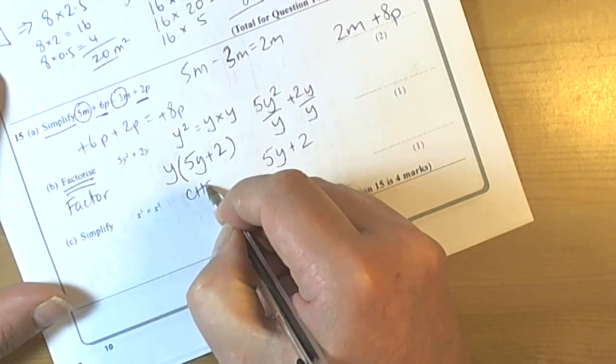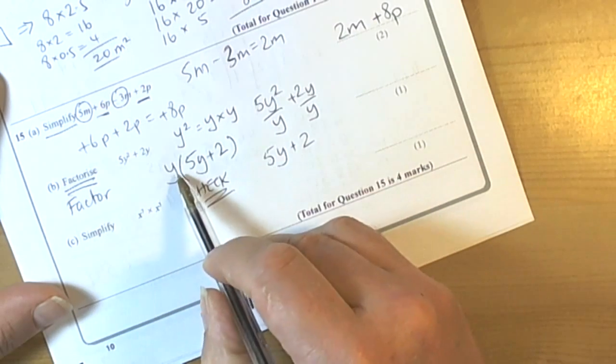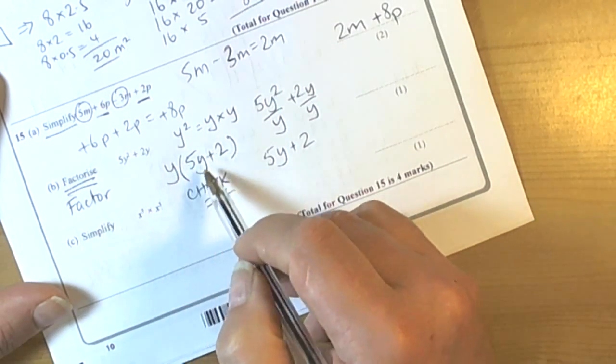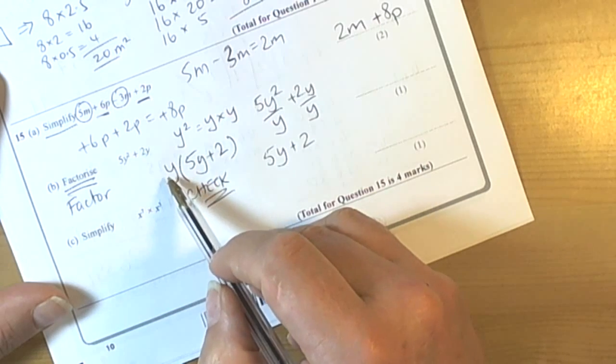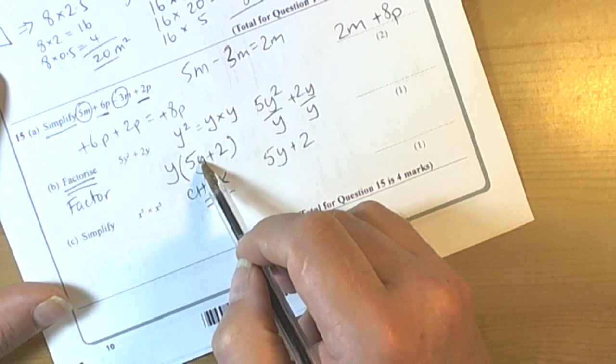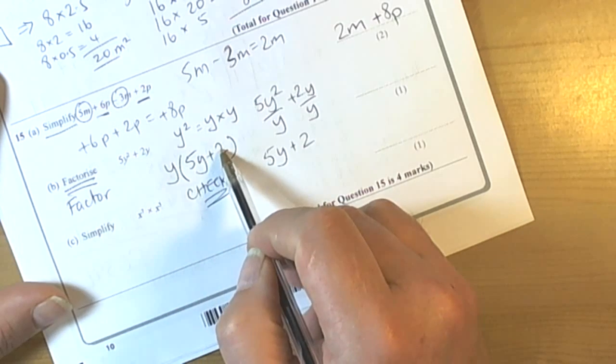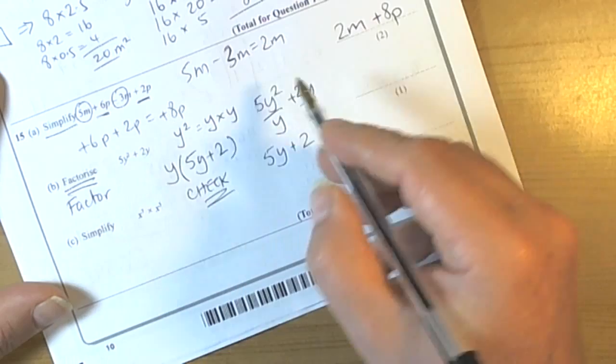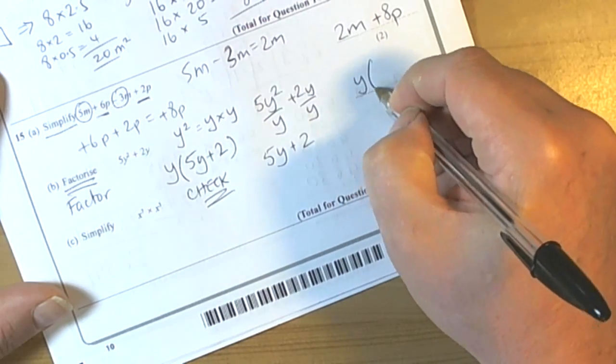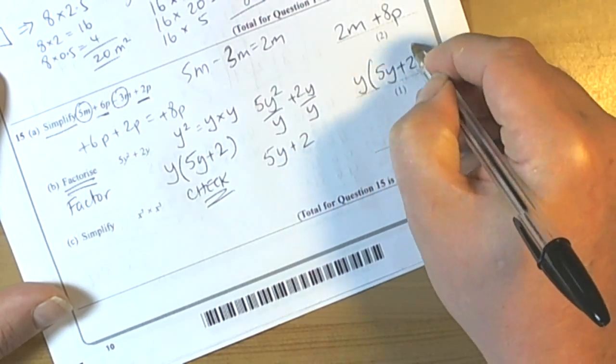Our check, and it's so important that we do this check, is that the opposite of factorizing is expanding. So we multiply out the bracket. Y times 5Y - well, Y times Y is Y squared, and there's 5 of them, so that's fine. Y times 2 is 2Y. So our check worked. The answer is Y times (5Y plus 2).